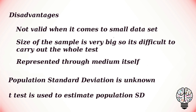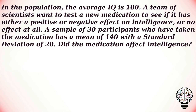T-tests are carried out when the population standard deviation is unknown. We use the t-distribution because the unknown population standard deviation is a value we must estimate. Let us take an example of a one-sample t-test. In a population, the average IQ is 100. A team of scientists wants to test a new medication to see if it has either a positive or negative effect on intelligence, or no effect at all.